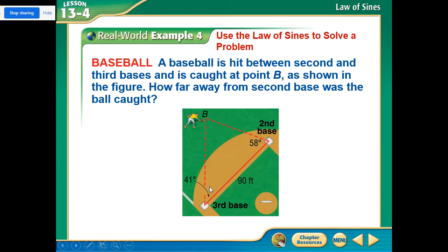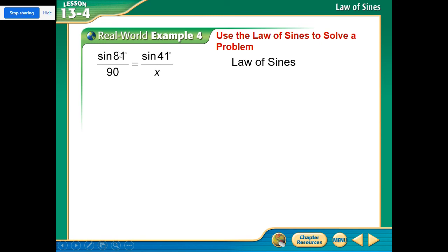So that's across from the 41. That's great. But we don't have a pair. We don't have this value or this value. The only side we have is this 90, so we need this angle. Luckily, that's not too hard to figure out because we have the two angles already. We can find out the third angle. So the third angle is 81.